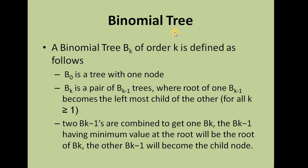First, let's talk about binomial tree as it is the basis of binomial heap. A binomial tree is represented as B of K, where K is the order. B0 is a tree with one node. Any BK tree can be represented as a pair of BK minus 1 trees, where the root of one BK minus 1 tree becomes the leftmost child of the other BK minus 1 tree.